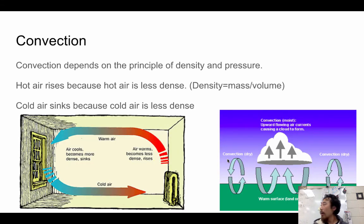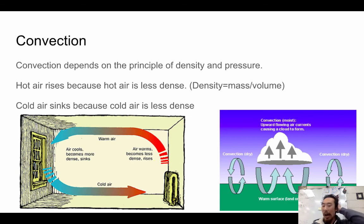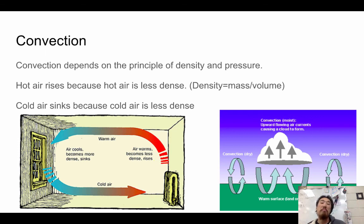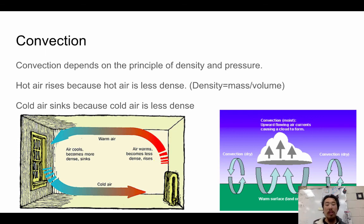Convection depends on the principles of density and pressure. Hot air is less dense because the molecules are constantly moving around, so there's less mass within a given volume. Cold air sinks because cold molecules don't move around as much — they're just hanging out. This is how clouds are formed and how our rooms are heated and cooled.